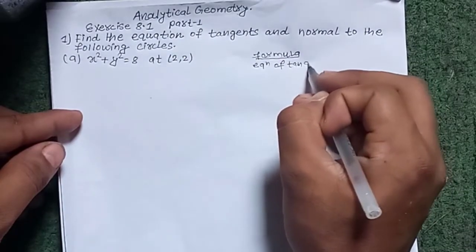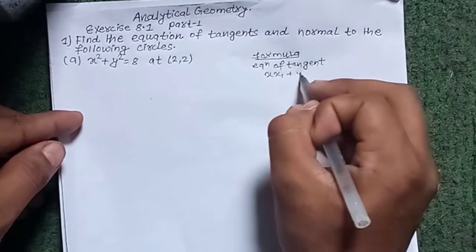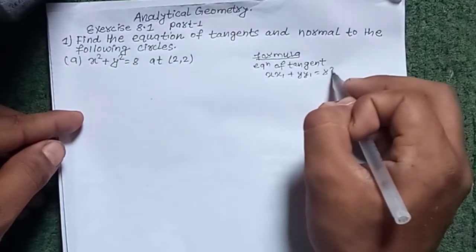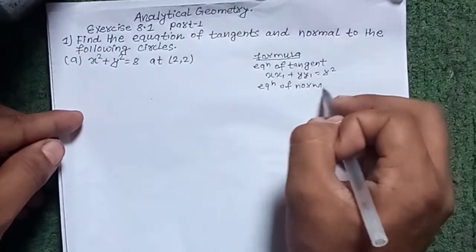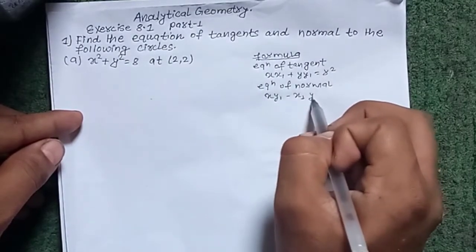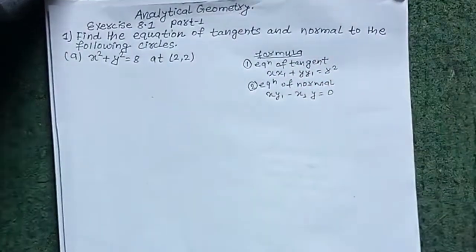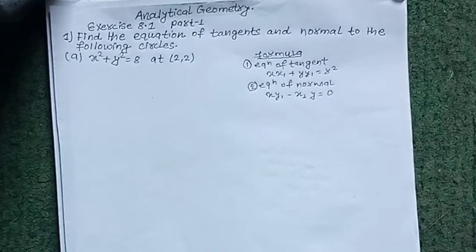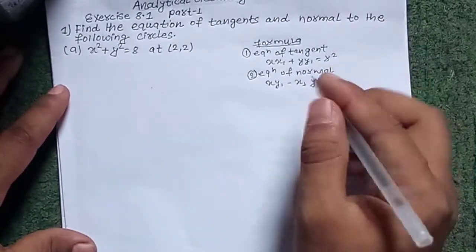Equation of the tangent formula: xx₁ + yy₁ = r². Equation of the normal formula: xy₁ - x₁y = 0. Note these formulas down so we can use them as a base to solve problems.